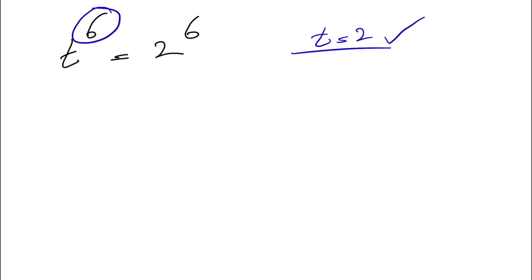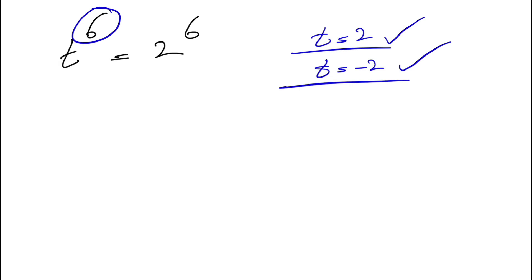Since we have an even exponent, t equals minus 2 is going to give us another answer too. Both of these are true, but the only thing missing is: are these two the only answers? As a matter of fact, we have six answers for this one. Guessing is a good strategy in multiple choice questions, but when we're asked to find all the answers, we have to be familiar with the algebraic process.